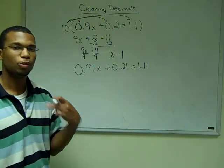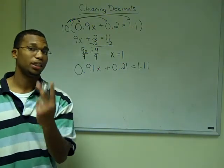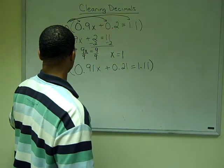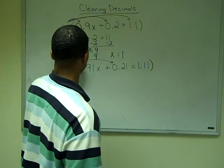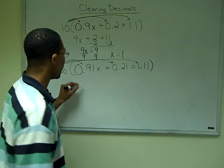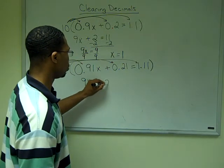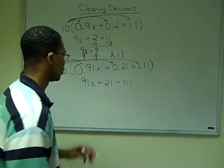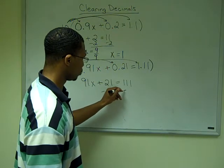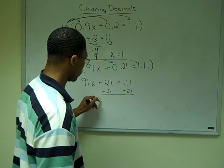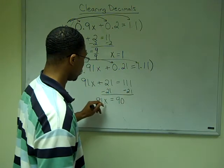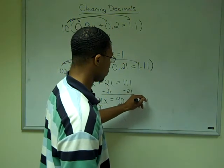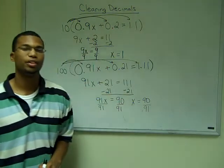In the second example, I need to move decimal places two places, so I multiply by 100. Once I multiply by 100, I get 91x + 21 = 111. Applying the addition and multiplication principle, my final answer is 90 over 91.